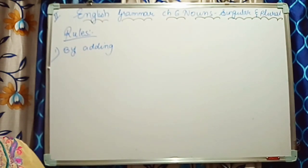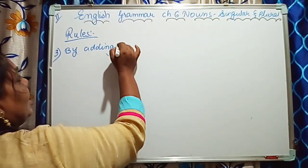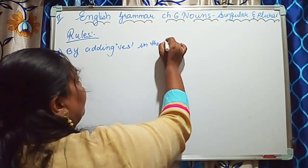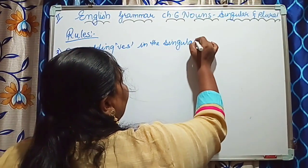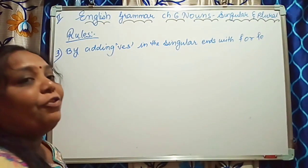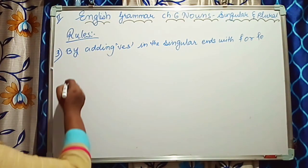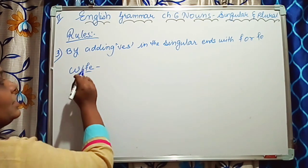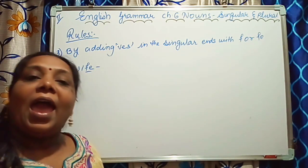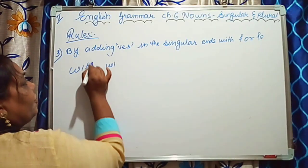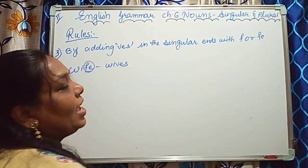Now the third rule is: by adding VES to the singular form which ends with F or FE. If I write wife — it ends with FE — so here we have to write wives. We cancel the FE and add VES.